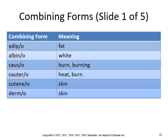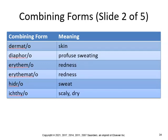Key combining forms: adipose means pertaining to fat. Albino means white; albinism is a condition of absent pigment in skin, hair, and eyes. Caus- means burning — causalgia is intense burning sensation in the skin. Cauterize means to heat or burn. Cutaneous means skin, so subcutaneous means beneath the skin. Dermo means skin, so dermatologist is a specialist in diseases of the skin, and dermatitis is inflammation of the skin. Diaphero means profuse sweating — diaphoresis is a condition of profuse sweating.